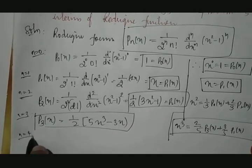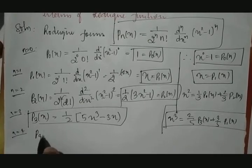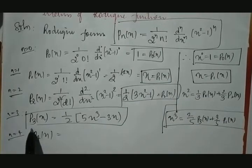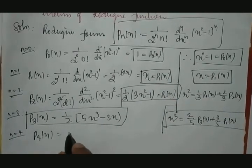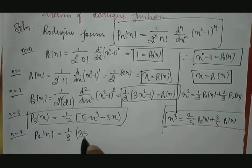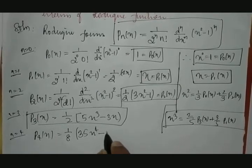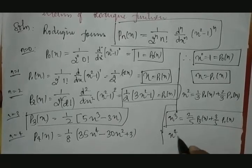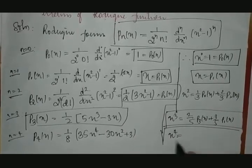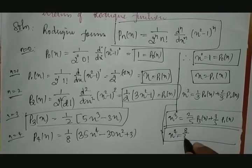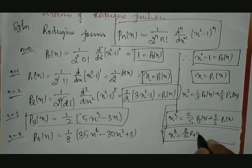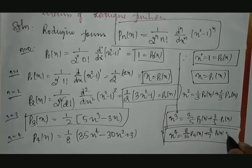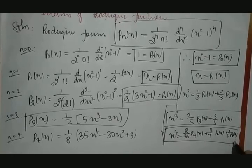Similarly, putting n = 4 in the Rodrigues equation, we get P₄(x) = (1/8)(35x⁴ - 30x² + 3). Therefore x⁴ = (8/35)P₄(x) + (4/7)P₂(x) + (1/5)P₀(x).